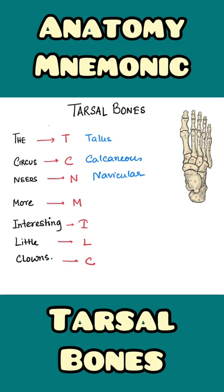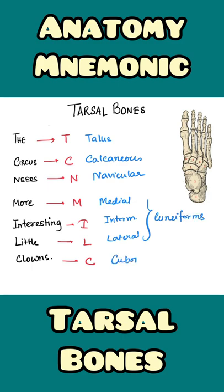For 'More Interesting' and 'Little' we get medial, intermediate, and lateral cuneiforms. And from the last C we get the cuboid bone. So these are the bones of the tarsus.